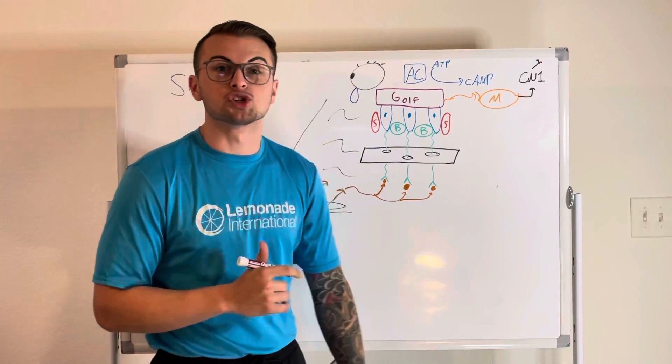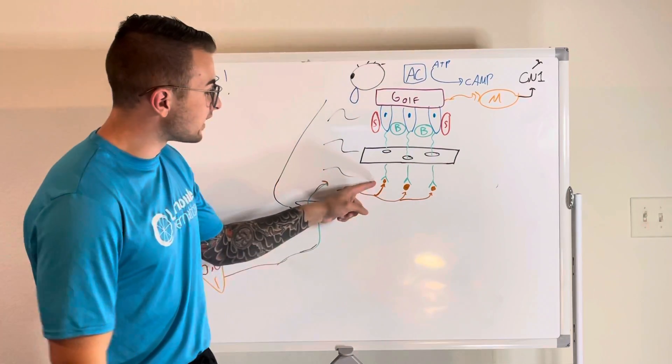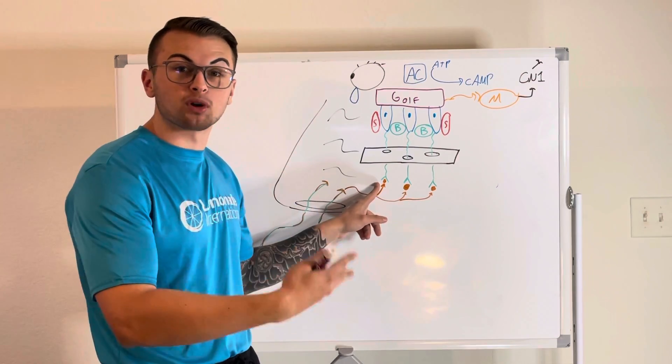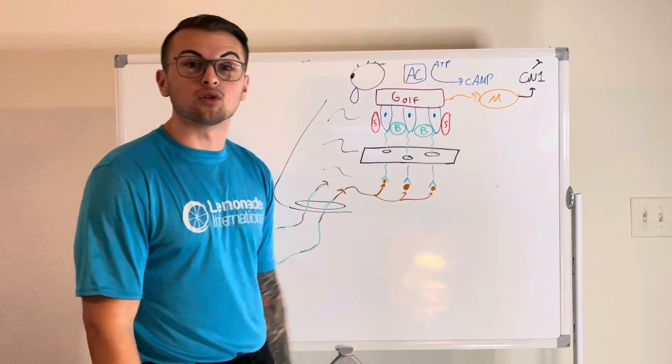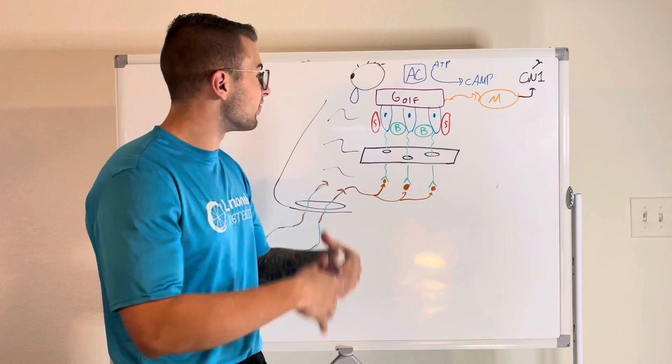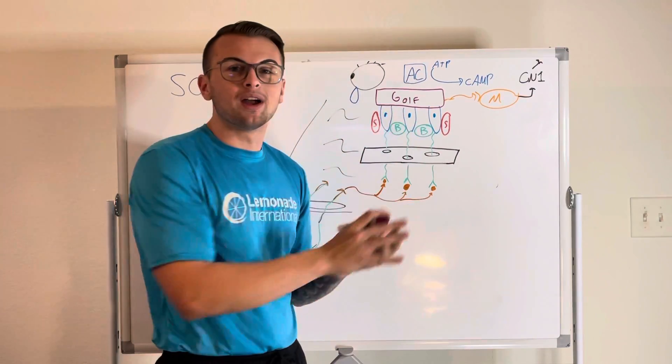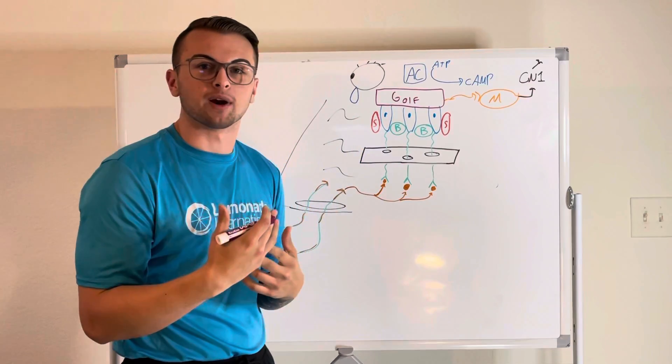These olfactory receptors shown here in blue, they bind to the odorant molecules and then turn this binding process into electrochemical energy, which then it transduces this odorant molecule into a form of message, which is then passed along to our brain.